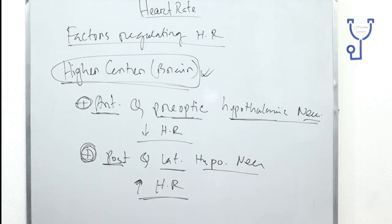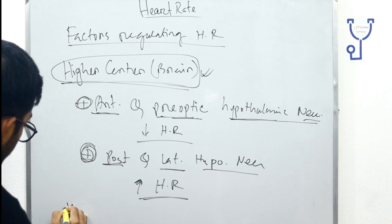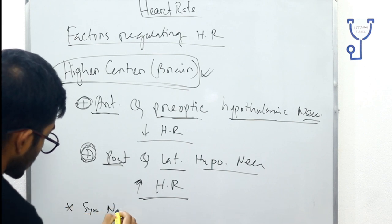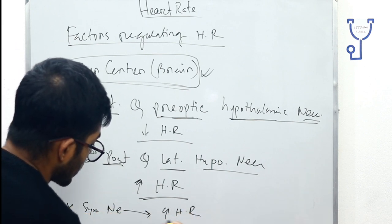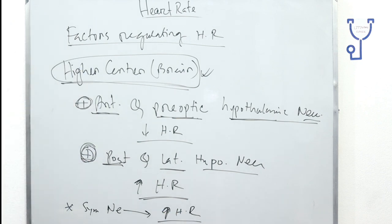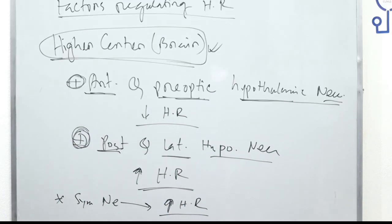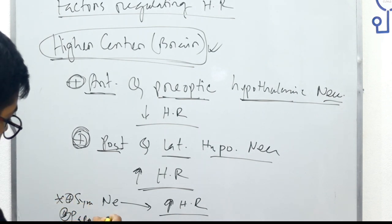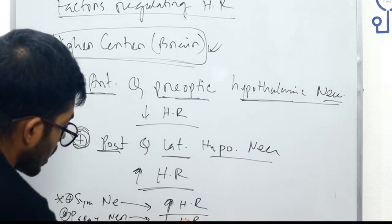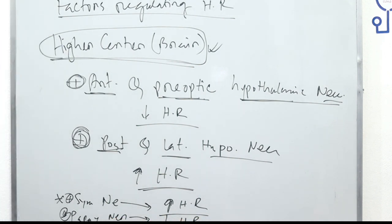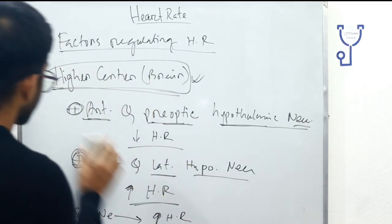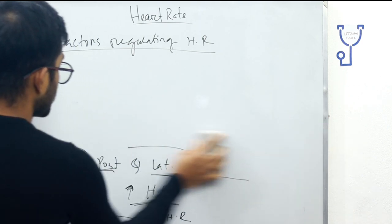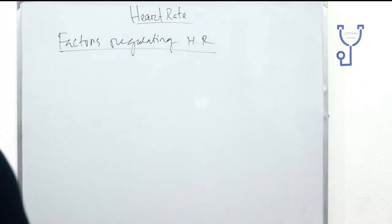Regarding cardiac nerves: stimulation of the sympathetic nerve causes an increase in heart rate, while stimulation of the parasympathetic nerve causes a decrease in heart rate.